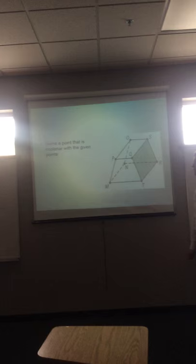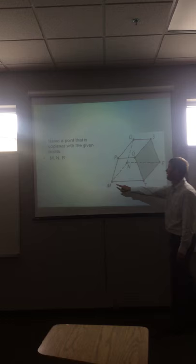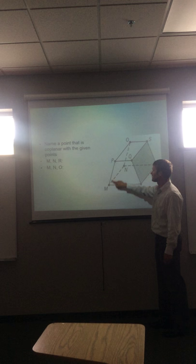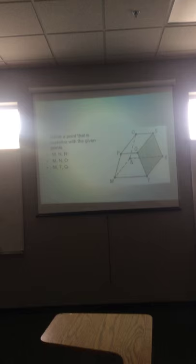If you want to name a point that is co-planar with the given points M, N, R. So if we look at it, M, N, R. So what else is on this bottom plane? It would be T. If you have M, N, O, so we are talking about this side here, and P would be co-planar.